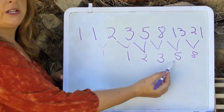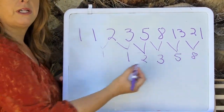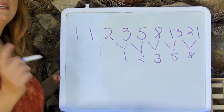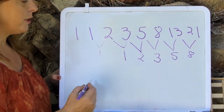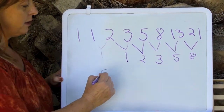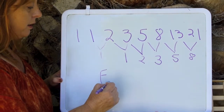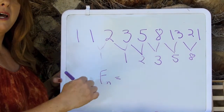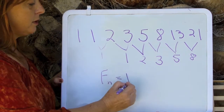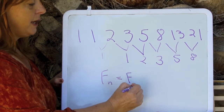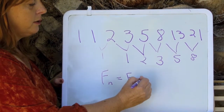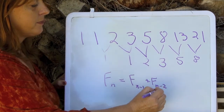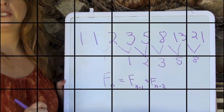Now check that out — we're starting a whole new Fibonacci sequence. So what does that tell us? That tells us that any given number in the Fibonacci sequence, let's call it F sub n, is equal to the sum of the previous two numbers, which would be F sub n-1 plus F sub n-2. And that is your Fibonacci.